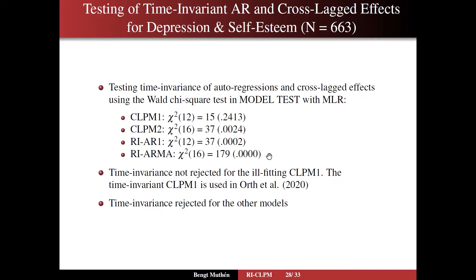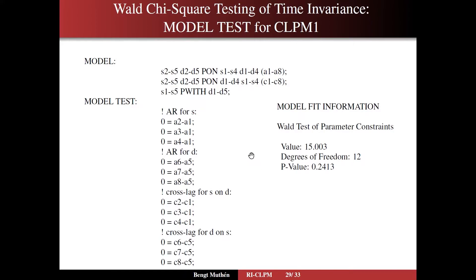Time invariance is rejected. So how do we do it? Here's what you have on slide 29. We do it for the CLPM1 model. You have this compact way of writing it — you may prefer to write S by itself and D by itself, but here it's in compact form. We have four S-on-S and four D-on-D, so a total of eight autoregressions. We just list them as the parameters they are. Same thing for the cross-lags: four plus four. In model test, since we've given those parameter labels, we can use model test to relate the second autoregression to the first, the third to the first, the fourth to the first.